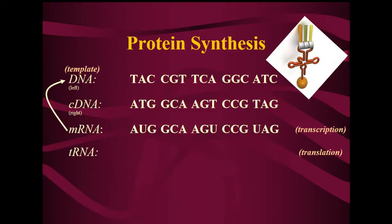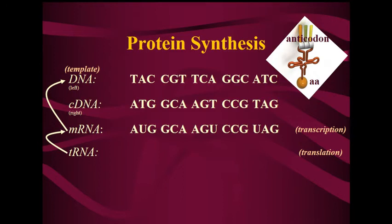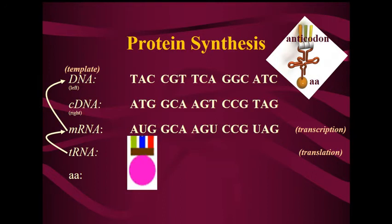A tRNA has two sides. One side has three bases called the anticodon, which are complementary to mRNA. On the other side, the tRNA carries an amino acid. So the anticodon is complementary to mRNA, and the amino acid is carried on the other side. Imagine our tRNA having the anticodon that matches up with AUG, carrying that amino acid with it.